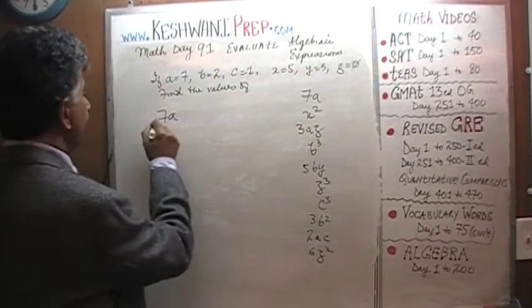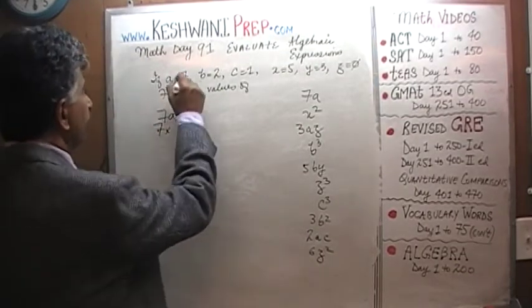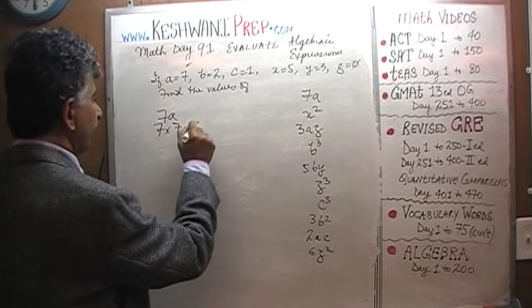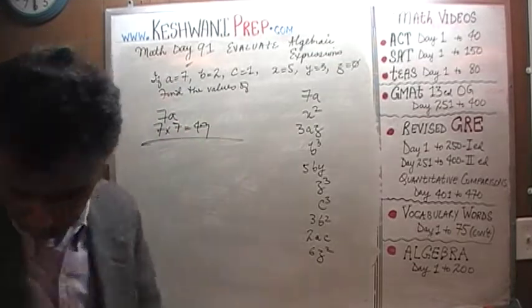7A, 7 times A we are told is 7, so 7 times 7 is 49.